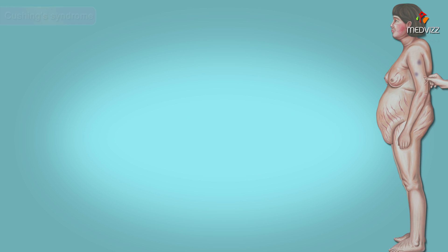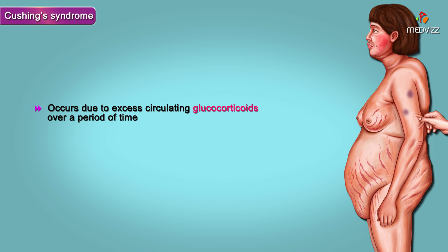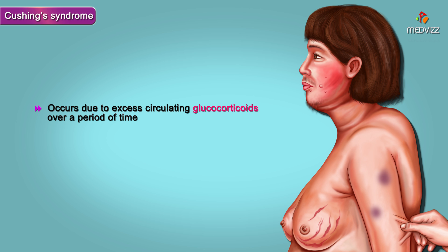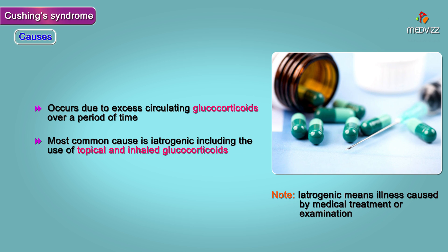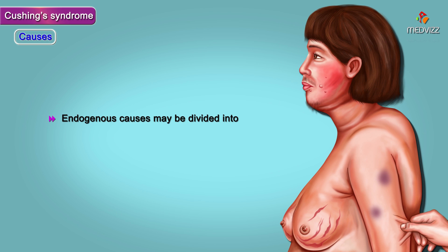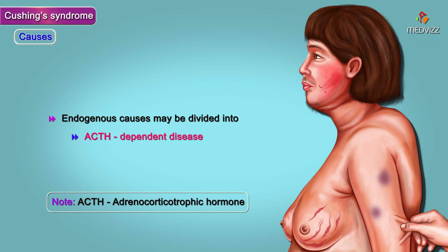Cushing syndrome occurs due to excess circulating glucocorticoids over a period of time. The most common cause is iatrogenic, including the use of topical and inhaled glucocorticoids. Endogenous causes of Cushing syndrome may be divided into adrenocorticotropic dependent and non-adrenocorticotropic dependent disease.